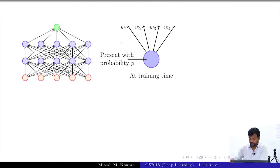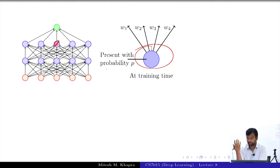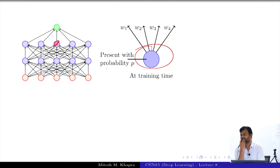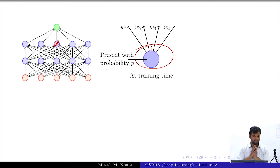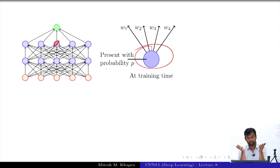At training time, each node was on with probability P, meaning the weights going out of it were available with probability P and unavailable otherwise. At test time, instantiating all 2^n networks and passing the test example through all of them would be the ensemble answer, but that is prohibitively expensive.